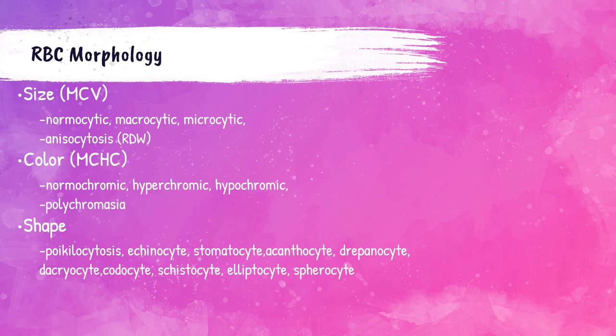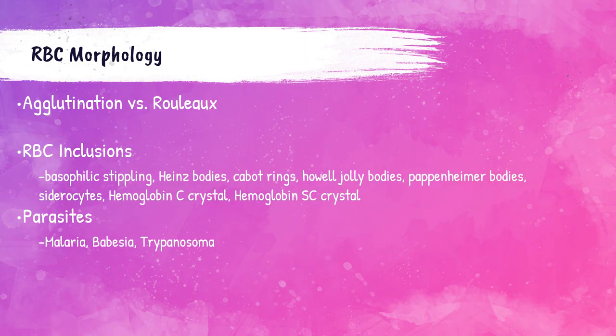Yes, you do need to recognize them all. In addition to size, color, and shape of the red blood cells, as medical laboratory professionals we need to be able to distinguish between agglutination of red blood cells and something we call Rouleau, which we'll talk about later in this presentation. Our red blood cells can also have something we call inclusions, which is material inside the red blood cell. Parasites can also invade the red blood cell, and we need to be able to identify those as well.